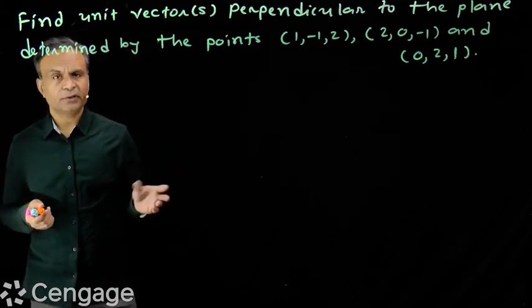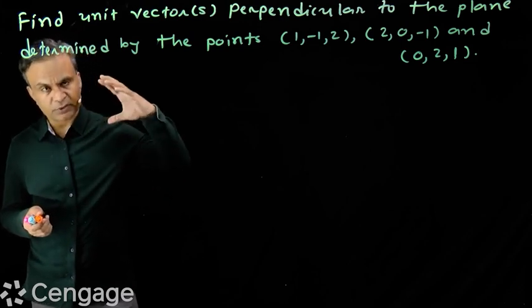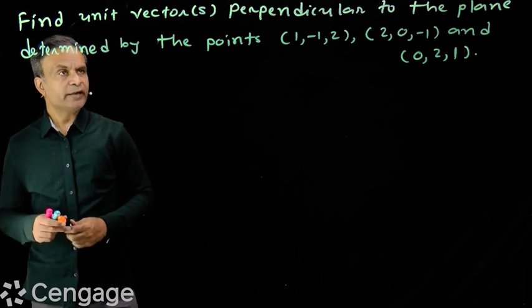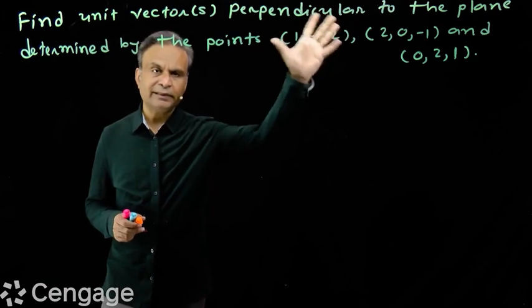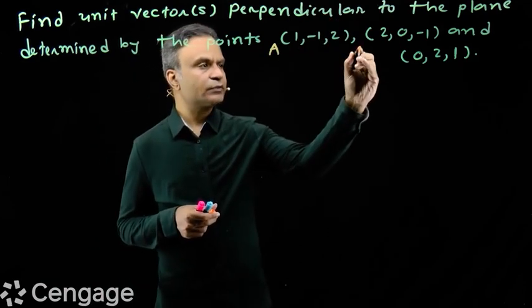Three non-collinear points in the space determine a plane. We have to find unit vectors perpendicular to this plane formed by these three points. Suppose this is point A, this is point B, this is point C.